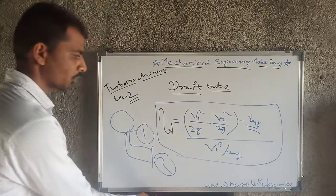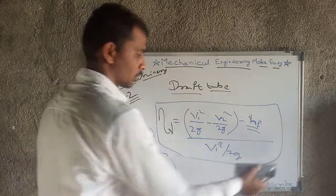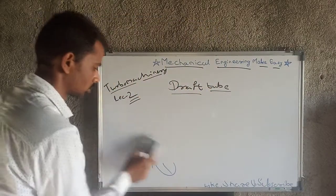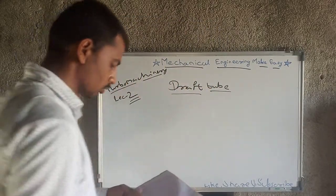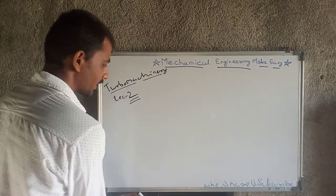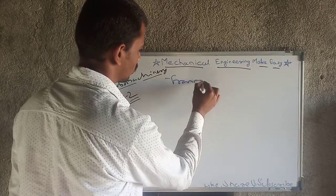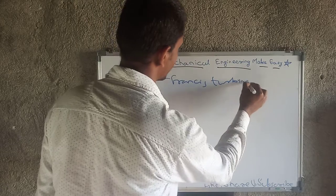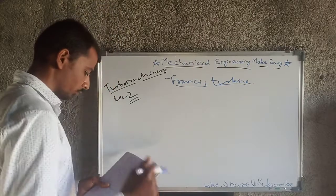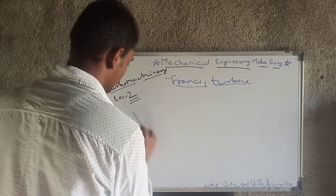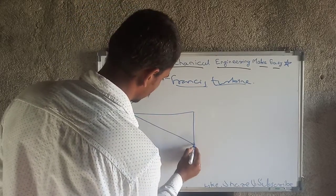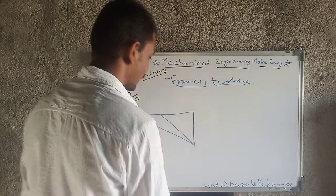Note down this formula. If you have any confusion you can comment — I am not moving too deep due to time limitations. We will move towards our main topic: Reaction Turbine, and specifically the Francis Turbine. We will draw the inlet velocity triangle and exit velocity triangle because these two triangles are very important.